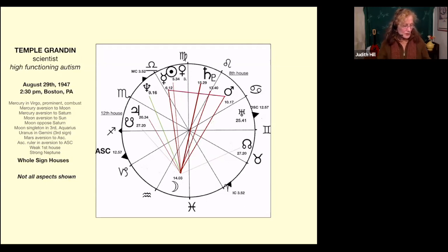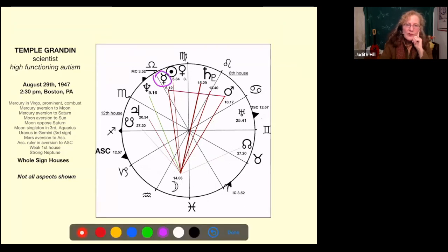She's hypersensitive to noise and sensory stimulation and loves science fiction, math, and writing horses. And look at this situation. First of all, let's look at Mercury. Mercury is an aversion to the moon. Mercury is an aversion to Saturn.